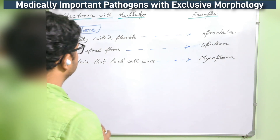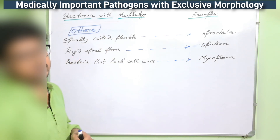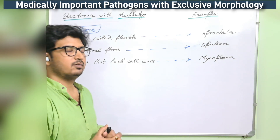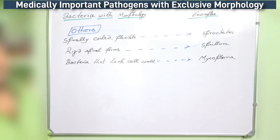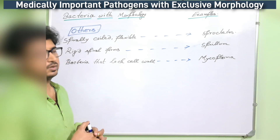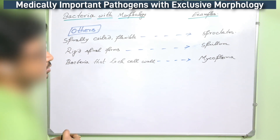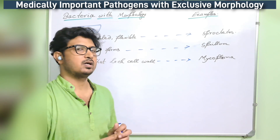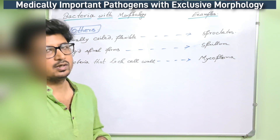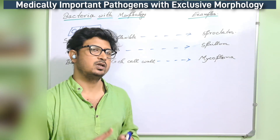In this other category we can see spirally coiled or flexible bacteria, rigid spiral forms, and bacteria that lack a cell wall. Spirochetes are very important pathogenic bacteria, classified under spirally coiled or flexible bacteria. Spirillum represents the rigid spiral forms. Mycoplasma, as you know, lacks a cell wall. In some books Mycoplasma is listed under pleomorphic bacteria, but due to the lack of cell wall it cannot actually be classified under pleomorphic structures.